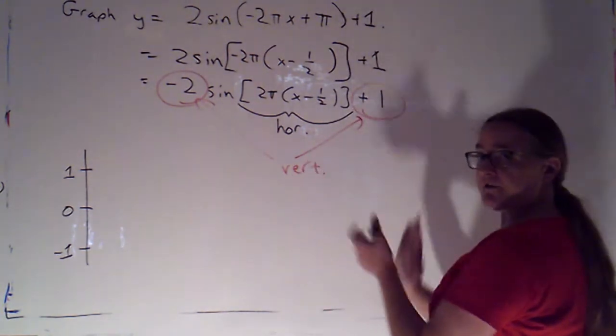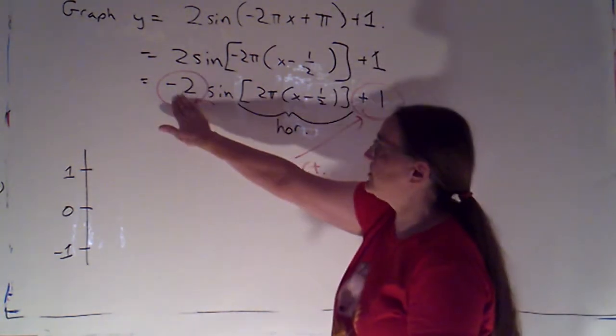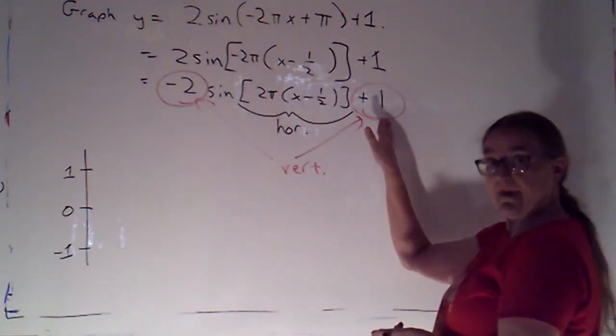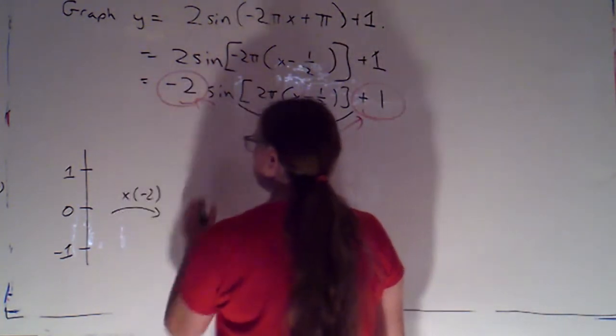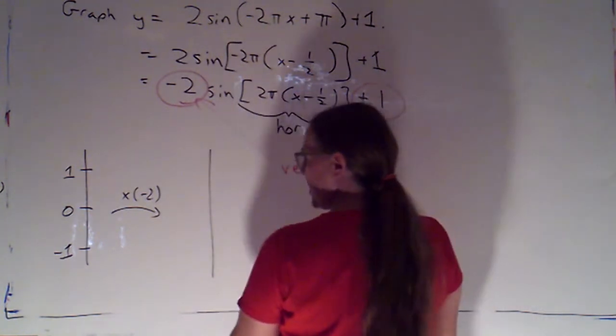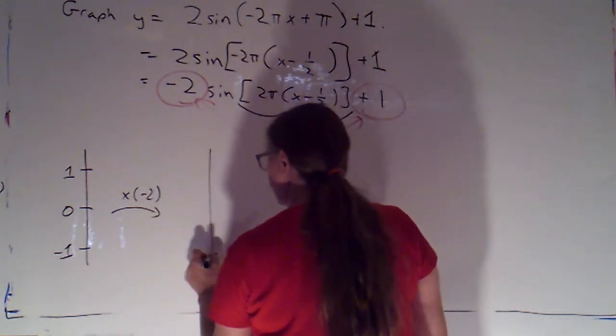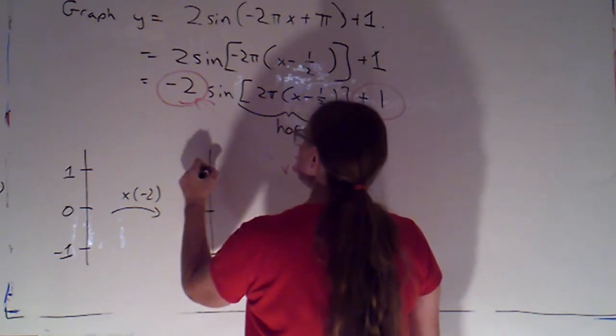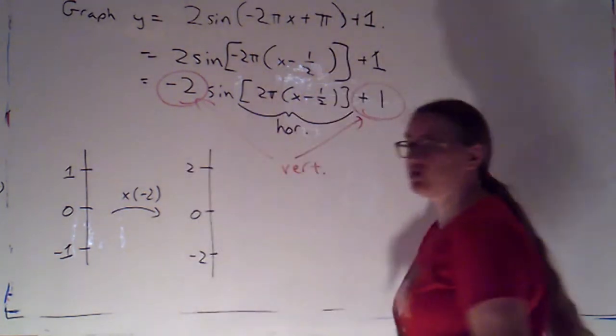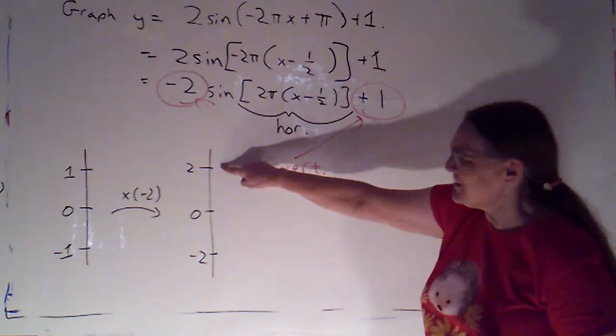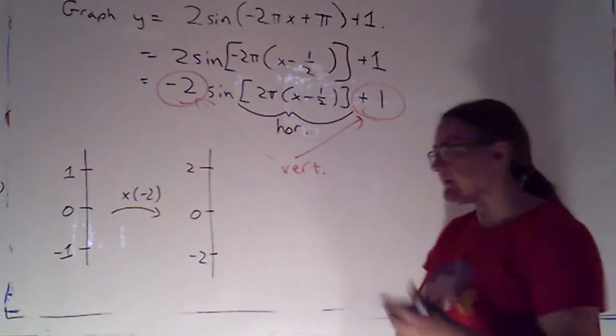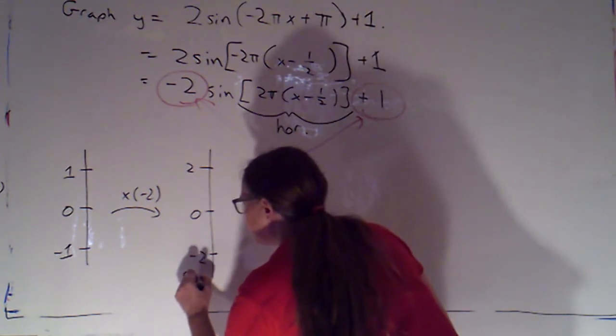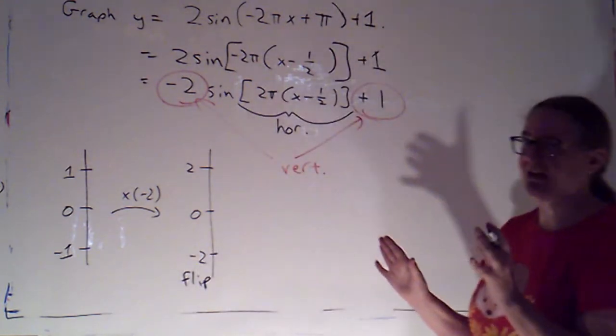Vertical transformations respect order of operations. I'm going to do the multiplication first and then the adding 1. So if I multiply by negative 2, that's going to change things to 1 times negative 2 becomes negative 2. 0 stays at 0. Negative 1 times negative 2 becomes 2. Do be careful. 2 is above negative 2. But because I multiplied by a negative, I know that we've done a flip. And I want to write that down.